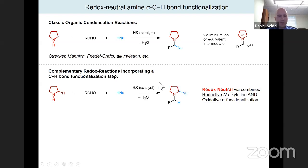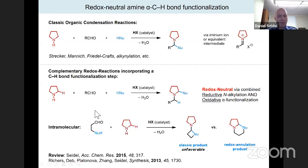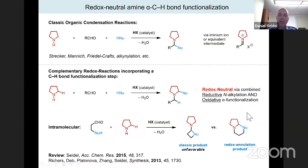To understand how they got started: if you link the aldehyde to the nucleophile via a two-carbon chain, the classic condensation product would require forming a strained four-membered ring, whereas what they call the redox annulation product gives a stable six-membered ring. This reaction was initially discovered by accident about ten years ago, as summarized in a 2013 Synthesis article.